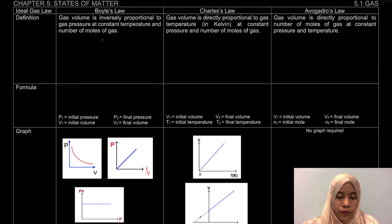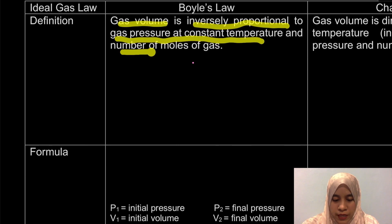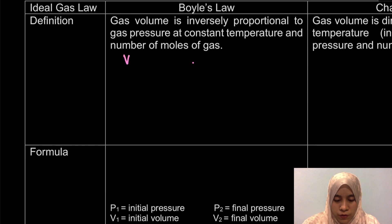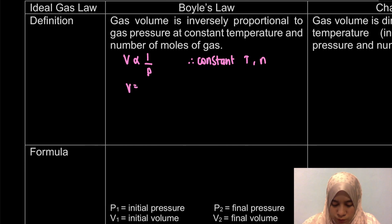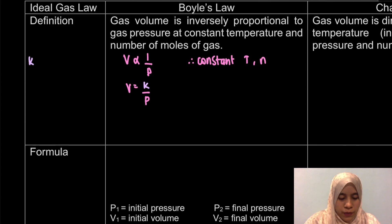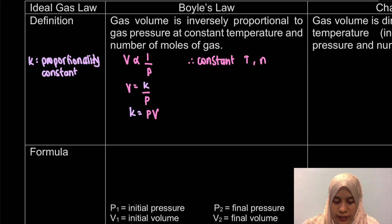What is Boyle's law? Charles' law and Avogadro's law. First thing first, let's look at the case of Boyle's law. For the definition, it mentioned that the gas volume is inversely proportional to the gas pressure at constant temperature and number of moles. So dalam case ni, volume is inversely proportional to pressure, and in terms of proportionality, kalau tak jadi equal, dia akan jadi V equal to K over P. K is actually our proportionality constant. When we make K as our subject, dia akan jadi K equal to PV. From PV ni kita akan guna untuk equation kita.